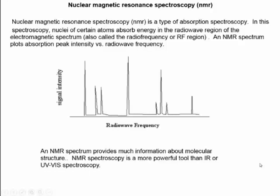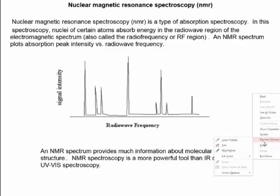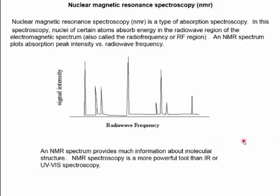In this video, I'll be discussing nuclear magnetic resonance, or NMR spectroscopy. NMR spectroscopy is a type of absorption spectroscopy. The light absorbed by molecules in NMR spectroscopy lies in the radio wave region of the electromagnetic spectrum — the very long wavelength region of the EM spectrum. We'll sometimes refer to the light in this region as radio frequency, or RF, radiation.